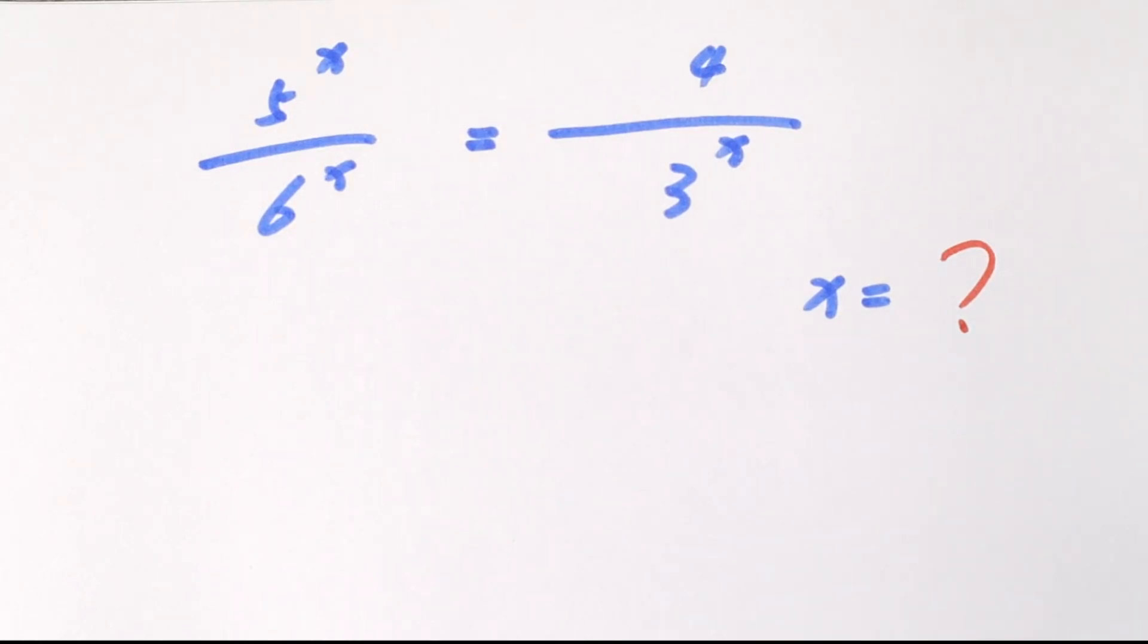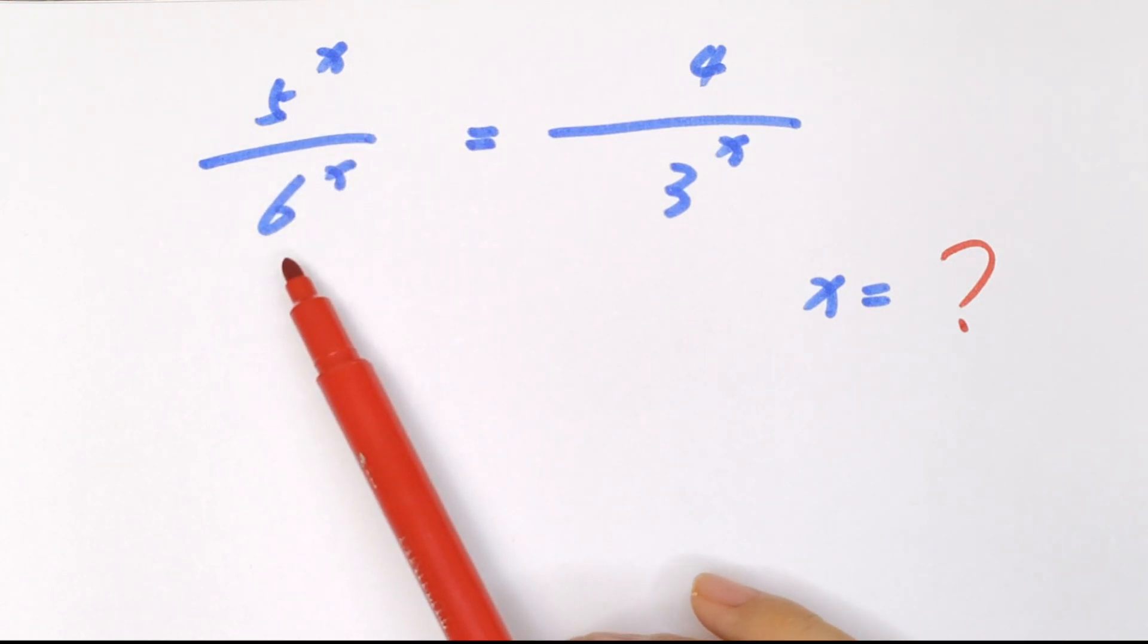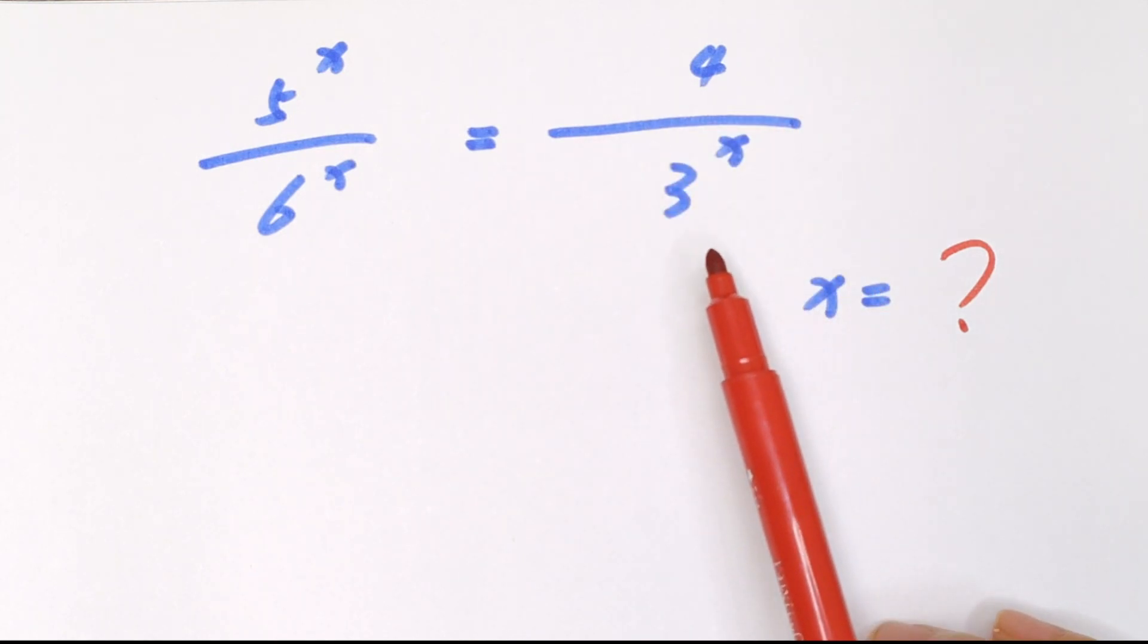Hello everyone, welcome to Math4U. How to solve 5 to the power of x over 6 to the power of x equals 4 over 3 to the power of x.